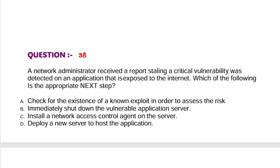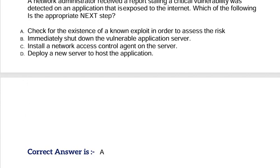Question: A network administrator received a report stating a critical vulnerability was detected on an application that is exposed to the internet. Which of the following is the appropriate next step? Option A, check for the existence of a known exploit in order to assess the risk. Option B, immediately shut down the vulnerable application server. Option C, install a network access control agent on the server. Option D, deploy a new server to host the application. Correct answer is Option A.